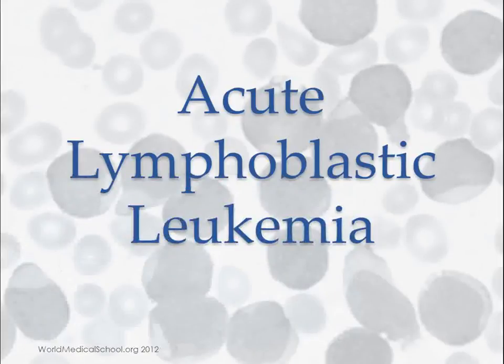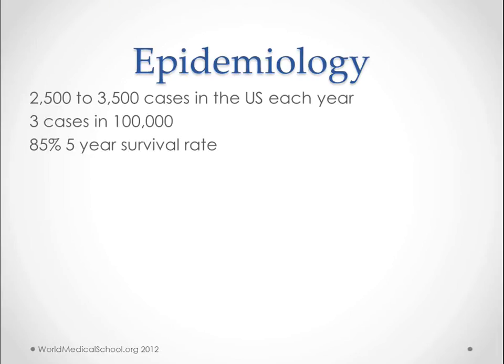Hi, this is Kendrick with WorldMedicalSchool.org. We're going to talk about acute lymphoblastic leukemia. This is a fairly uncommon disease in relation to the other diseases we've talked about recently, but it still is one of the most common killers of children. It's the most common cause of natural death in children after perinatal complications and congenital abnormalities. So it's still a really big deal.